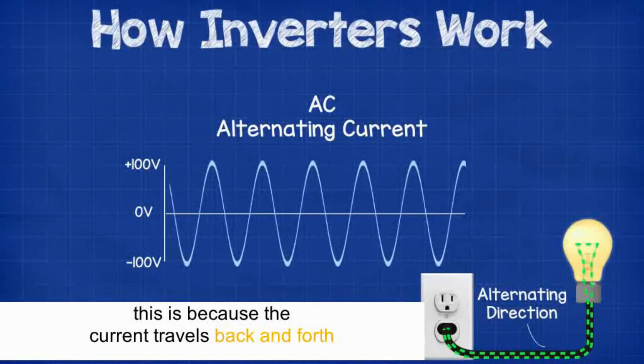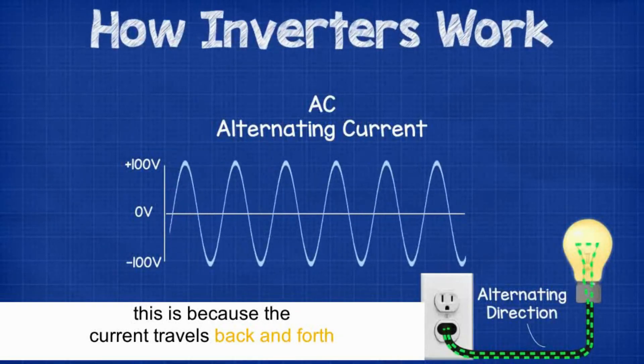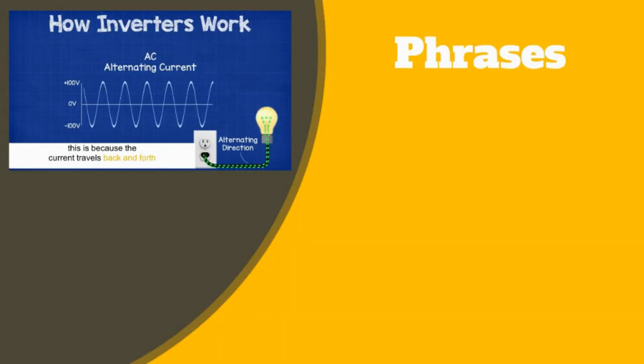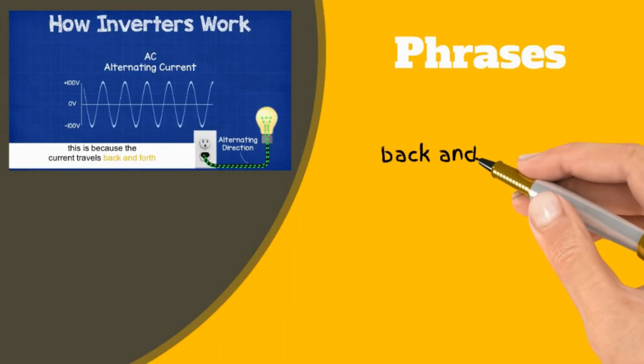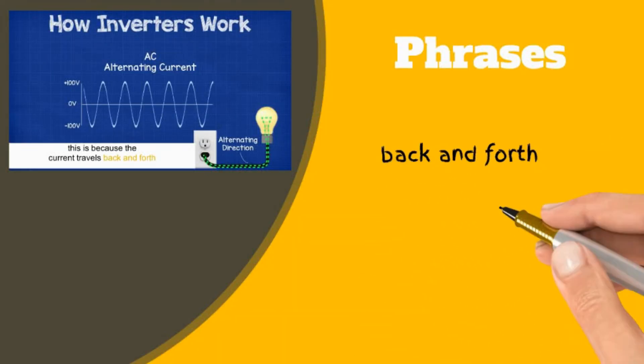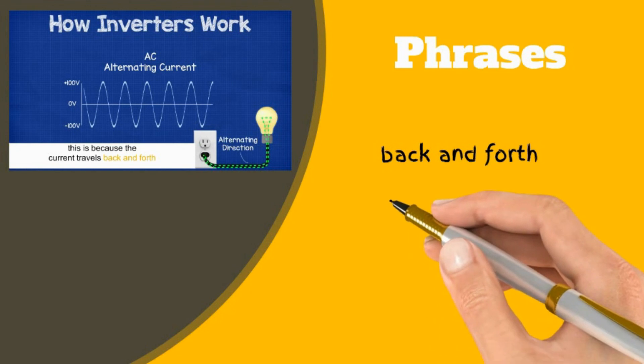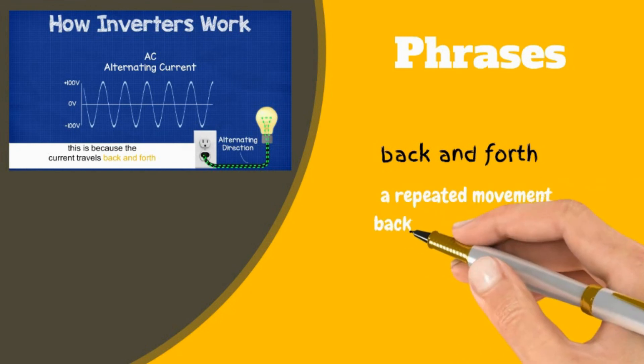This is because the current travels back and forth. Back and forth: a repeated movement backward and forward, or from side to side.